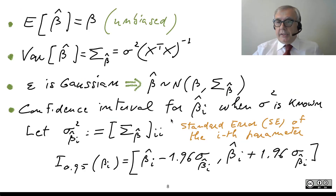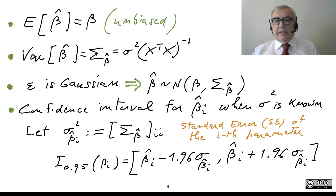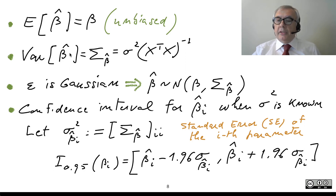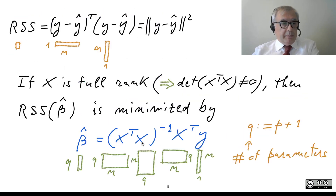Under this statistical model, we have some remarkable results. First, the expected value of beta-hat equals beta — this is equivalent to saying the least squares estimator is unbiased, which is a nice property. Also, we can obtain the variance matrix of beta-hat. Beta-hat is a random quantity because we can go back to its expression and see that it depends on Y.